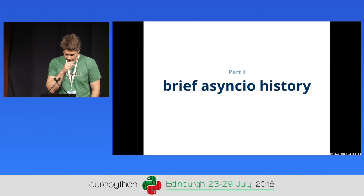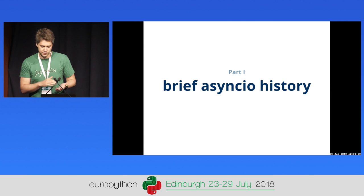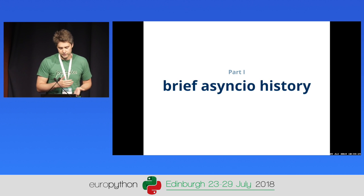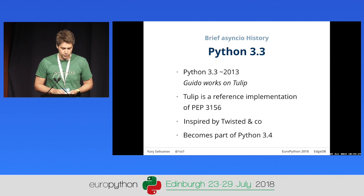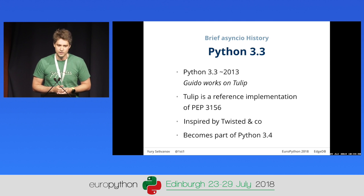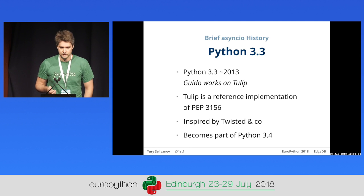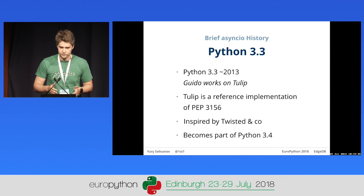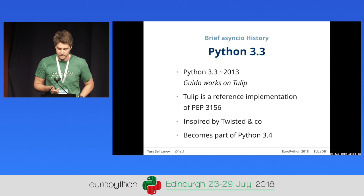Before we get to the meat of the talk, let's briefly discuss how AsyncIO was born and its history, because it explains some of the idiosyncrasies in its design. We started working on AsyncIO around Python 3.3 — we had just landed the yield-from syntax, partly for something like AsyncIO. Guido was working on asynchronous stuff when he was at Google, and back then there were two different approaches to asynchronous concurrent code in Python: Greenlets and Stackless Python.